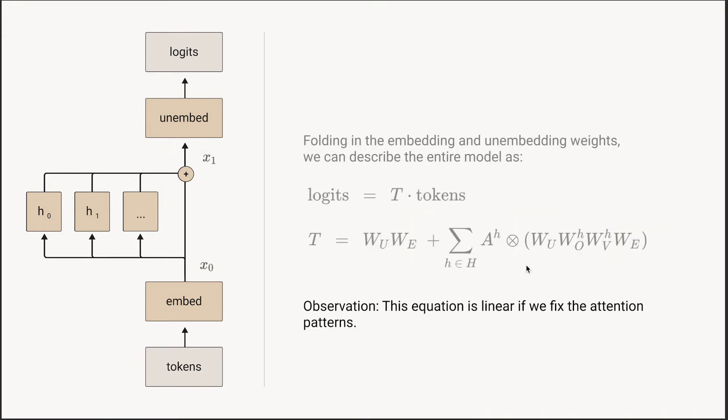If you fix the attention pattern, the model is linear, and that's something we can get a lot of leverage out of. In general, any time you can split a complex function into two parts where holding one constant gives you a very simple function, and holding the other constant also gives a simple function, that's a nice point of leverage. That's exactly the case we have here.